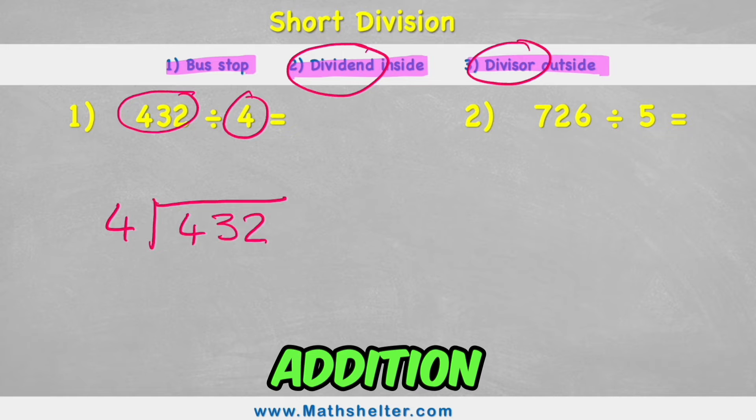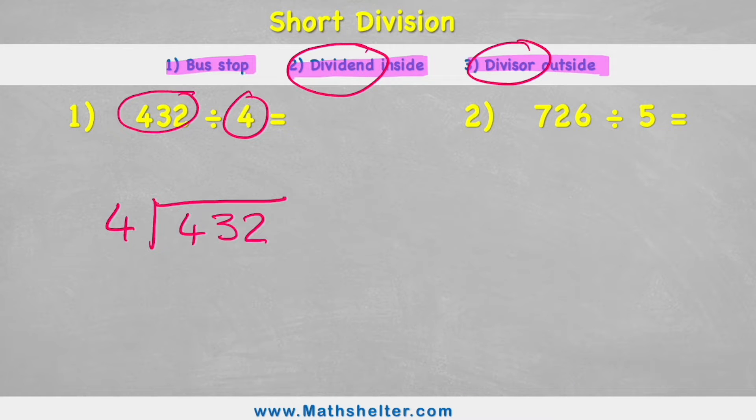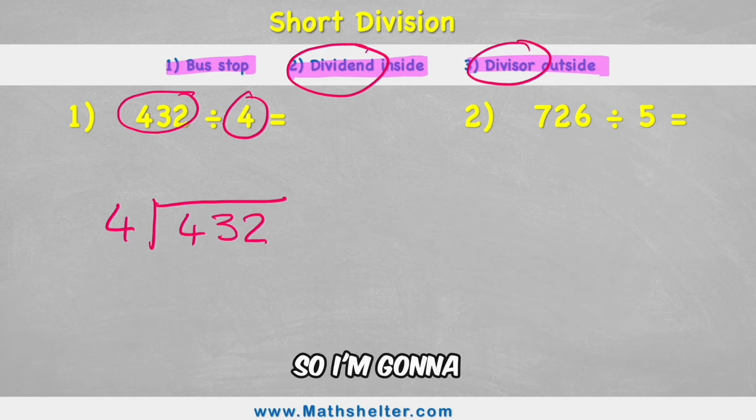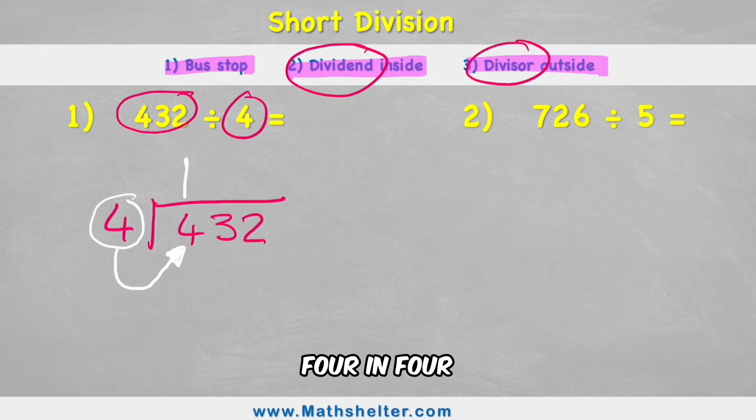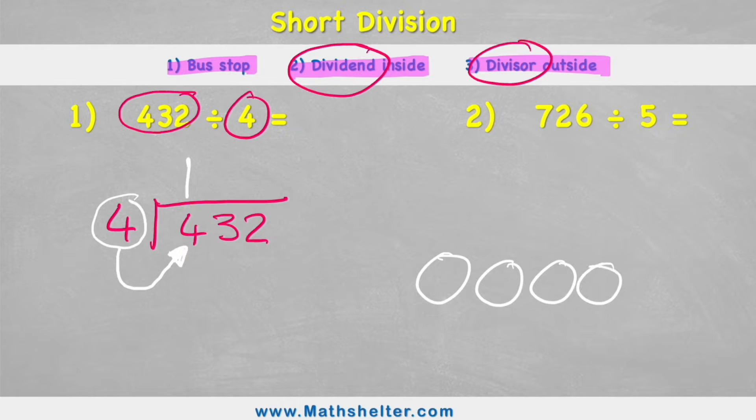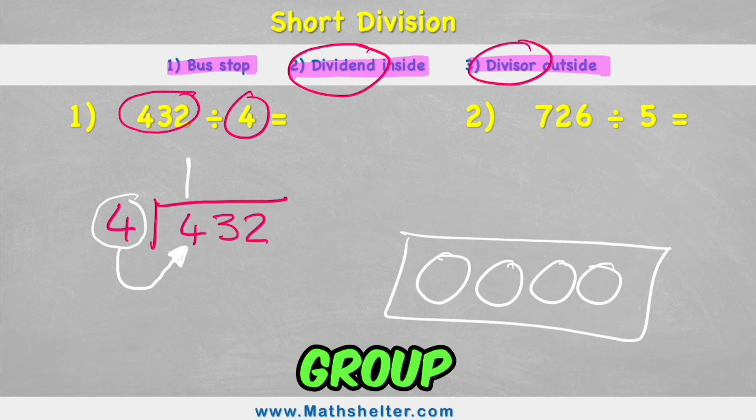And unlike addition, multiplication and subtraction, I'm actually going to start with the largest value this time. So I'm going to get my divisor and I'm going to see how many fours there are in 4 using the four from the hundreds column to start with. And there are one four in 4. If I have four circles, I can collect one group of four.